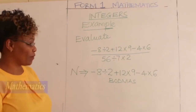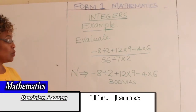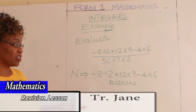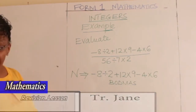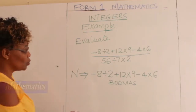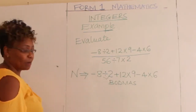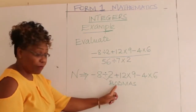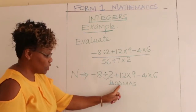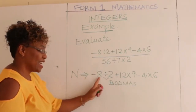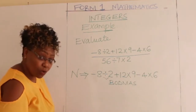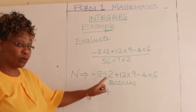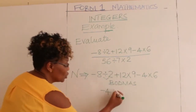I know you are aware of that from primary school. So we take the numerator and rewrite it. We have division, addition, and multiplication. Since we don't have brackets or 'of', we start with division. Minus 8 divided by 2 gives you minus 4. Then you continue with the rest.